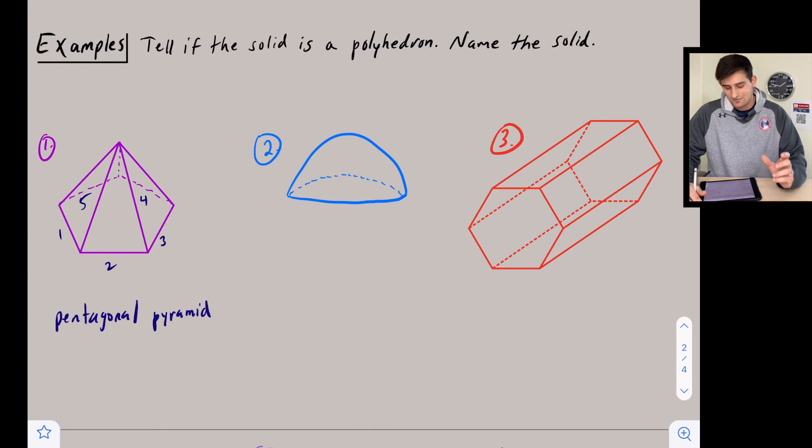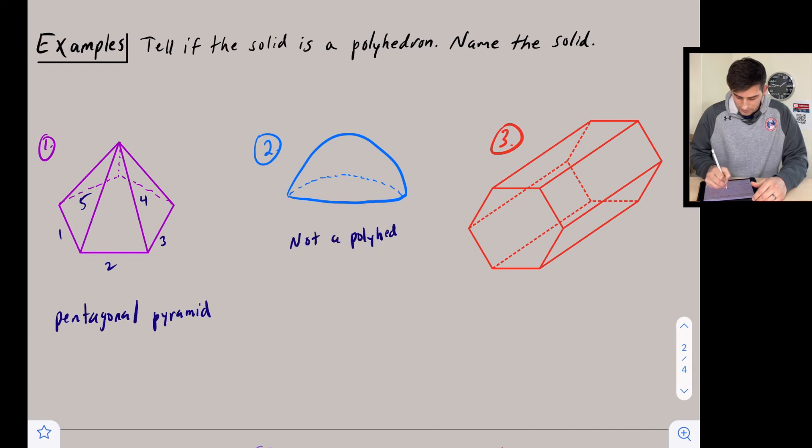Number two: notice we have a hemisphere—it looks like half a circle, but three-dimensional. This one is not a polyhedron because it is a hemisphere and doesn't have straight sides.